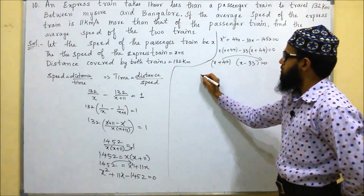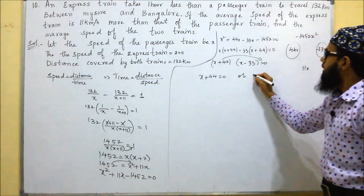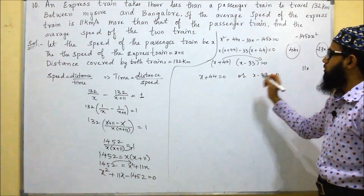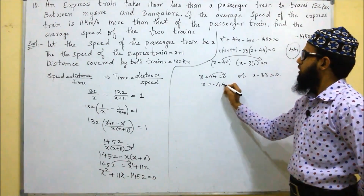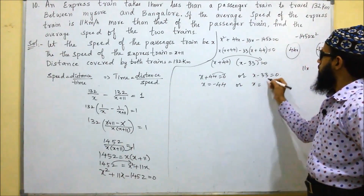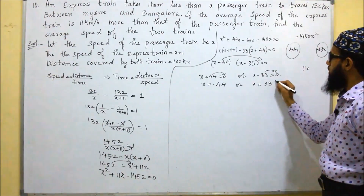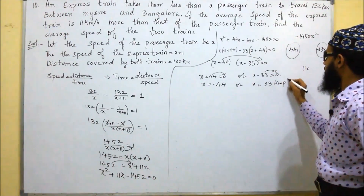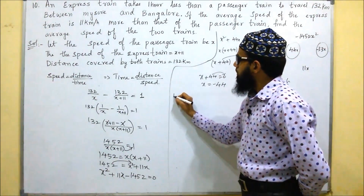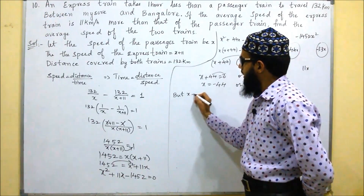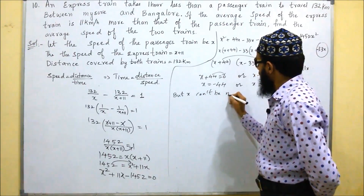So either x plus 44 equals 0, giving x equals minus 44, or x minus 33 equals 0, giving x equals 33 km per hour. Since speed cannot be negative, we reject x equals minus 44.